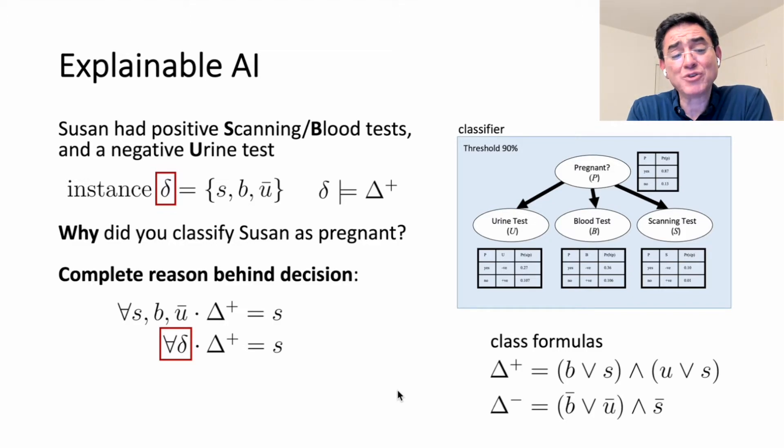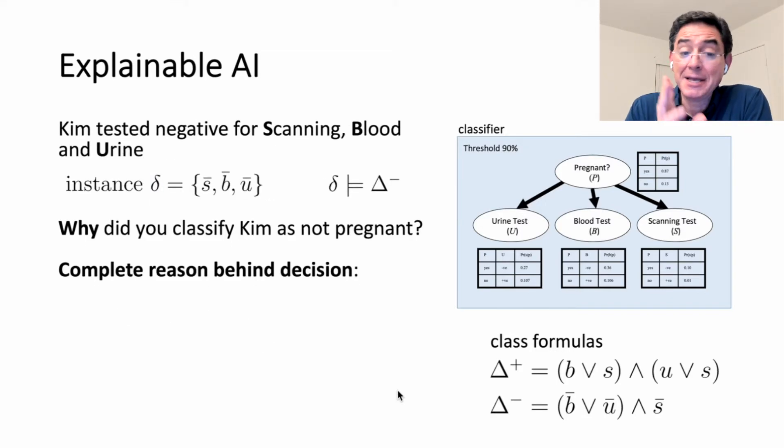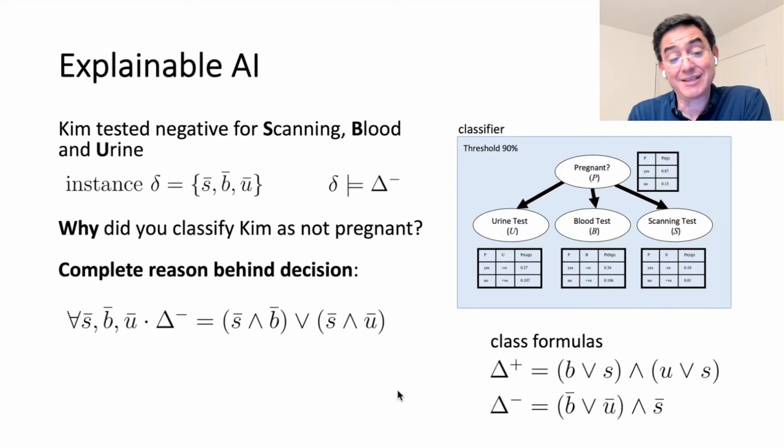Here's another example. Sometimes we use this notation for quantification where we quantify the instance collectively as opposed to writing individually each of its variable settings. In this example, we have Kim, tested negative on everything, not pregnant, complete reason computed by quantifying the negative formula in this case because this is a negative instance.